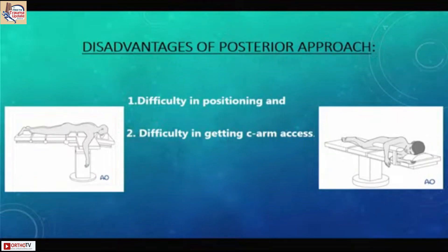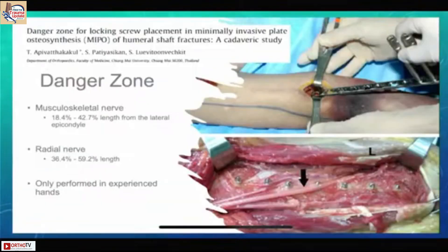The posterior approach may be very useful for distal humerus fractures, but in the middle third, positioning the patient becomes very cumbersome and moving the image intensifier around the fracture site during the operation becomes very difficult. Nowadays MIPO has come — a minimally invasive method — but it should be performed by experienced surgeons, and we should be very careful placing the MIPO screws as they will be very close to the radial nerve.